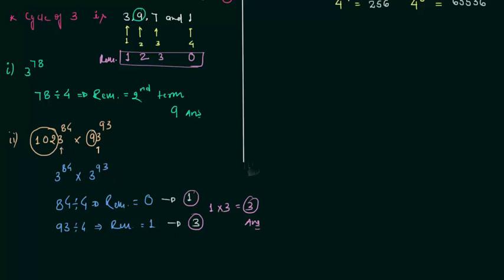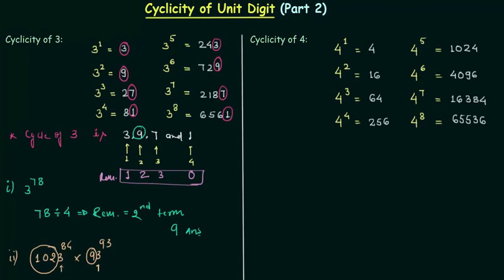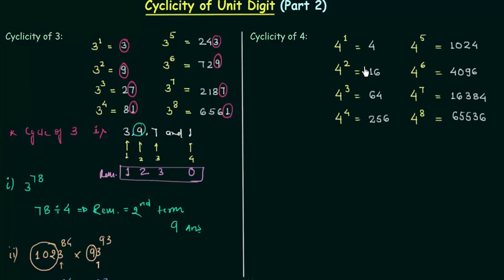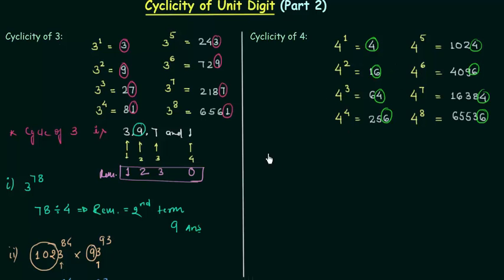This is all for cyclicity of 3. Now we move to cyclicity of 4. 4 raised to power 1 is 4, raised to power 2 is 16, raised to power 3 is 64, and raised to power 4 is 256. Focusing on the unit place: we have 4, 6, 4, 6 — and this pattern continues. So the cycle of 4 has 2 digits: 4 and 6.